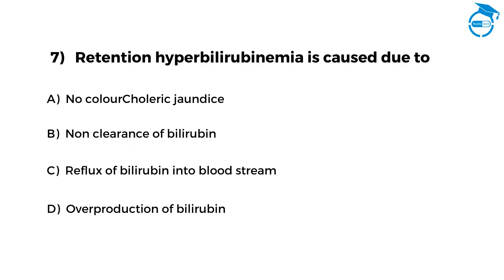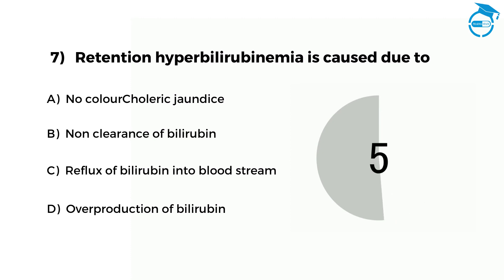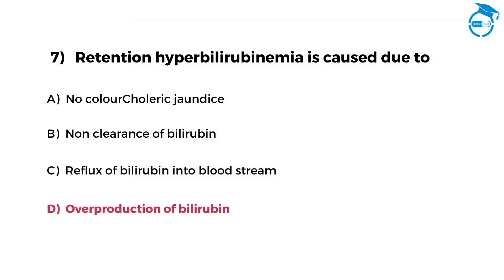Retention jaundice or bilateral binding jaundice is caused due to. Option A: extrahepatic jaundice. Option B: non-clearance of bilirubin. Option C: regurgitation and reflux of bilirubin to bloodstream. Option D: overproduction of bilirubin. Post your answer in comments. The right option is D, that is overproduction of bilirubin. You are participating really well in the test. Let us see if you can answer the next one.